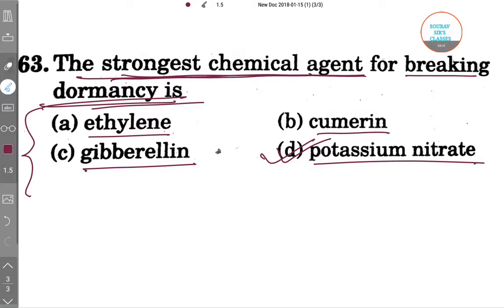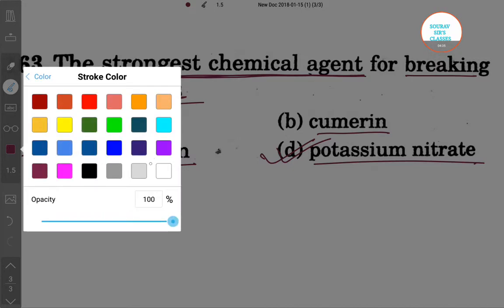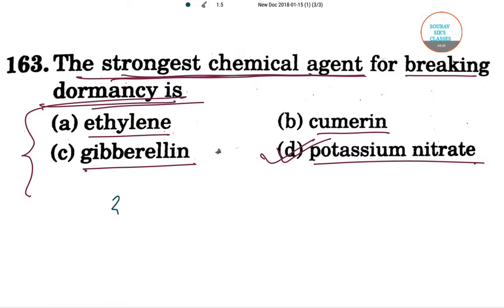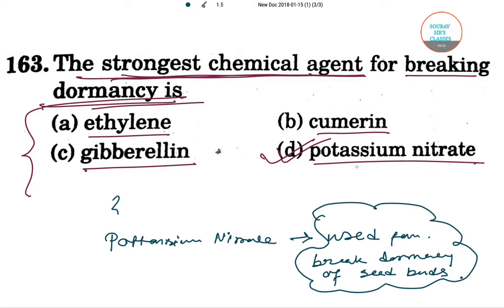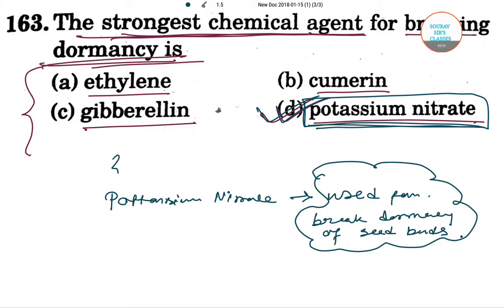The answer will be option D, that is potassium nitrate. Potassium nitrate is the strongest chemical agent and is mainly used to break the dormancy of seed buds. So option D, potassium nitrate, is the correct answer. That's all for now, thank you for watching.